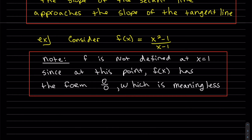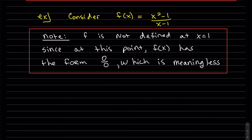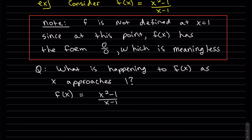We're going to consider the function f(x) = (x² − 1)/(x − 1). When we plug in x = 1, we get 0 on the bottom and 0 on the top — the form 0/0, which is meaningless. So we want to see what happens to f(x) as x approaches 1 by plugging in values from the left and right. We factor the top using difference of squares, cancel the common factor (x − 1), and get x + 1.